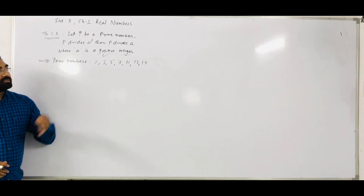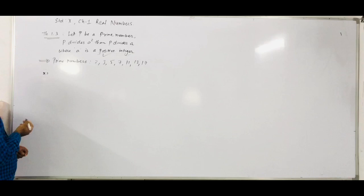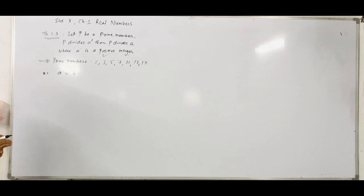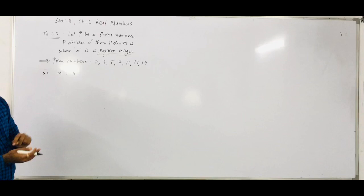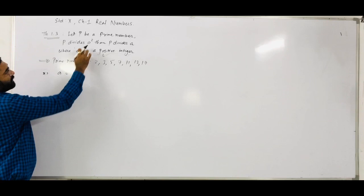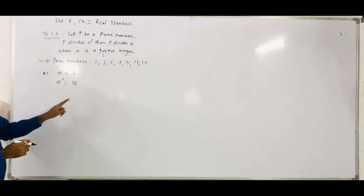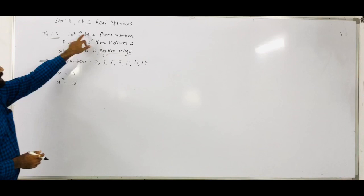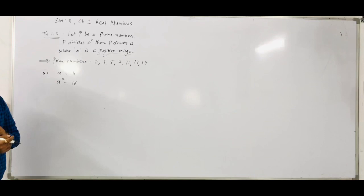We will discuss that theorem with one example. Suppose I take A equal to 4. A is equal to 4, which is a positive integer. Now as per that theorem, A squared means 4 squared, which is 16. So that 16 is divided by any prime number.